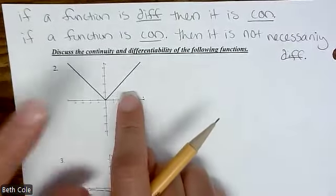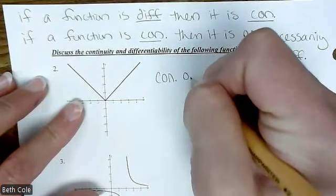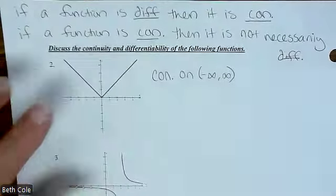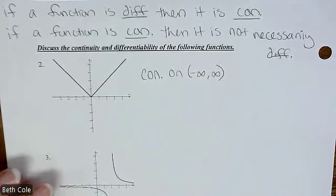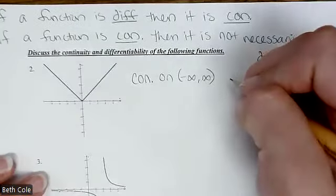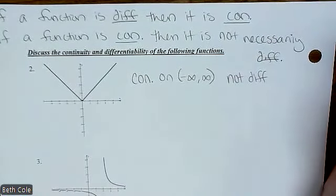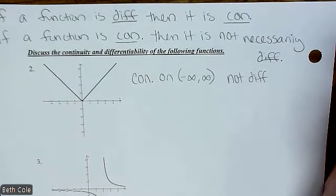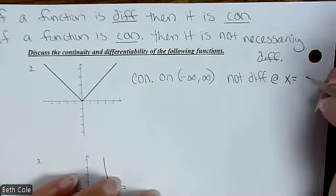What we're going to do for each of these graphs is state whether it is continuous and differentiable. Looking at this one — is this graph continuous? Yes. So we're going to say continuous on negative infinity to positive infinity — continuous all the time. We're going to say not differentiable. If you're saying no, you want to say where and give a reason. Not differentiable at x equals 0.